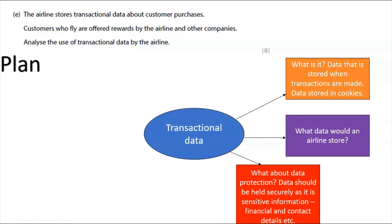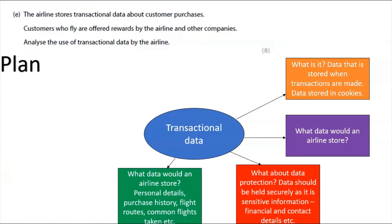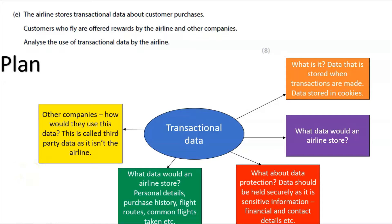Think about what data an airline would store, and data protection — the data should be held securely as it's sensitive information: financial and contact details. Personal details, purchase history, flight routes, common flights taken. It must link back to the airline specifically — not a general company but an actual airline — to get maximum marks. The question also mentions other companies, so you need to think about third parties and how they use this data.